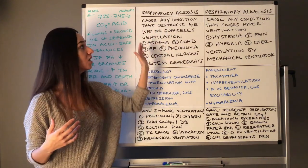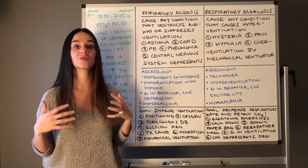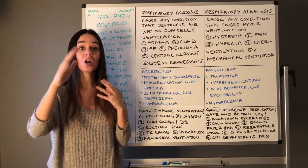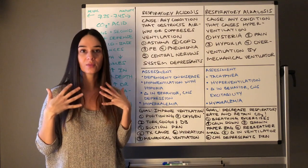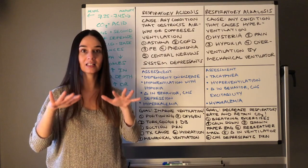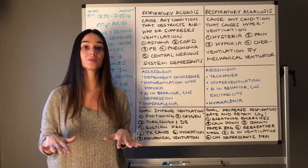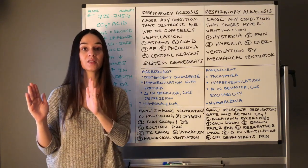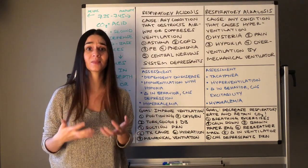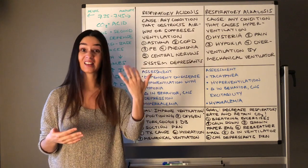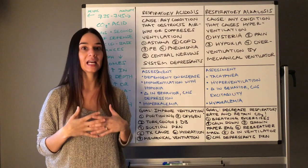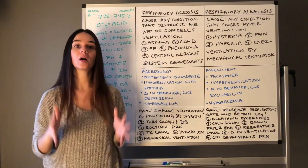Any condition that obstructs your airway or suppresses ventilation can cause respiratory acidosis. If inspiration and expiration are greatly depressed — say a client had an opioid overdose with a respiratory rate of six breaths per minute — they're getting little oxygen in but also little CO2 out, so they are retaining that acid. Group it all together: anything that obstructs airflow or suppresses ventilation means retained CO2 and retained acid.